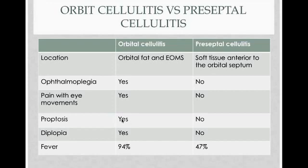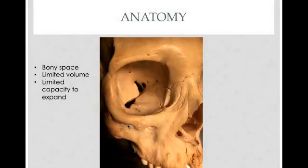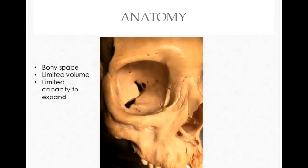Fever is also a lot more common in orbital cellulitis compared to preseptal cellulitis. As for proptosis — if you look at the anatomy of the globe, it's a bony space with limited volume and very limited capacity for anything to expand. So if you have inflammation behind the eye, it basically pushes the globe forward, which gives you proptosis.